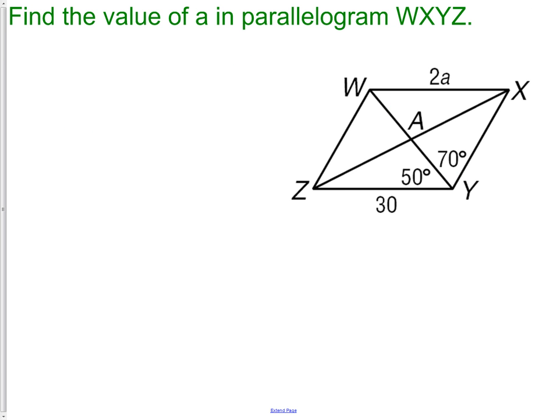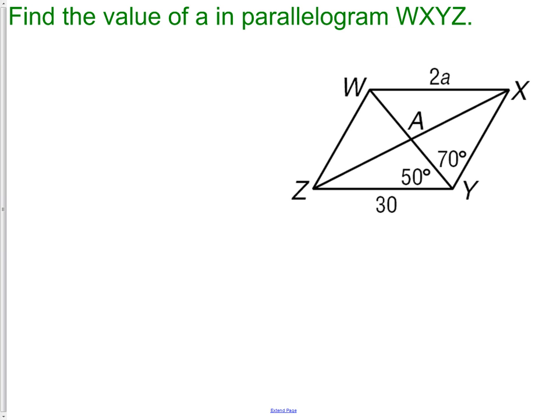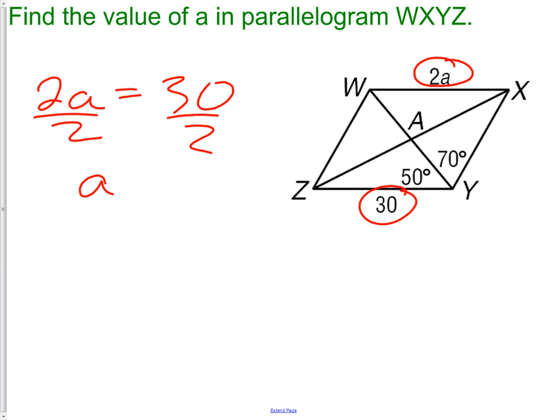Our next question is find the value of a in the parallelogram WXYZ. Well, if we go back to our properties of a parallelogram, it says opposite sides are congruent. Well, we want to find the measurement of the a up here. Well, we actually have a pair of opposite sides. So we know that opposite sides are congruent, which makes 2a equal to 30. Divide by 2, and a equals 15.